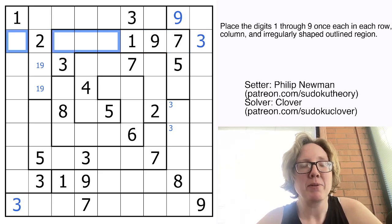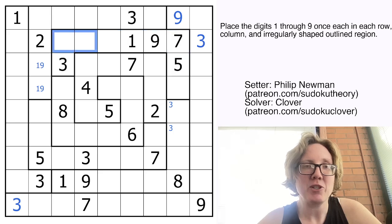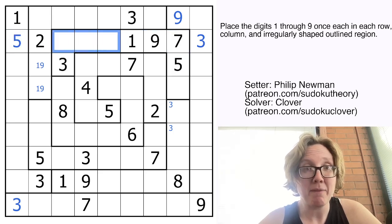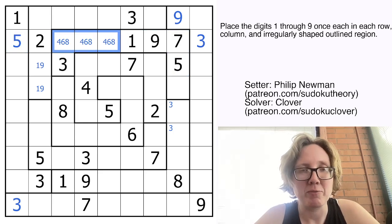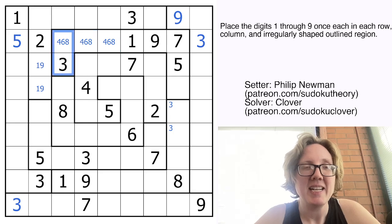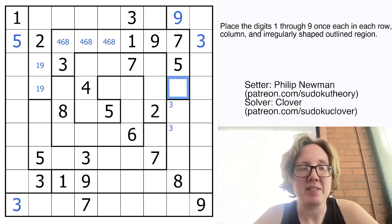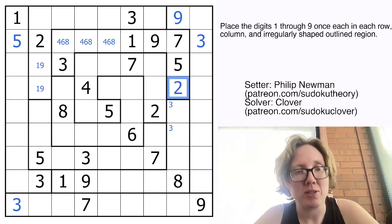I also need to put a five somewhere in this row. And because I have a five in this region, it can't go in those cells. So that's going to be my five. And so these digits are going to just be the remaining digits for this row, which are four, six, and eight. And then the last digit that I have to place in this region is going to be a two. So there's a two.